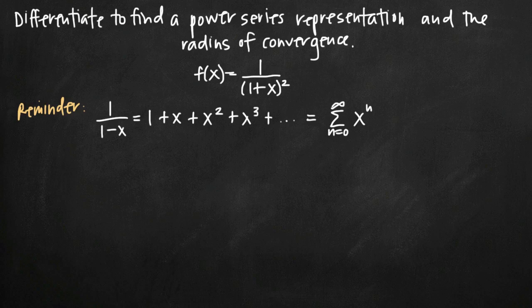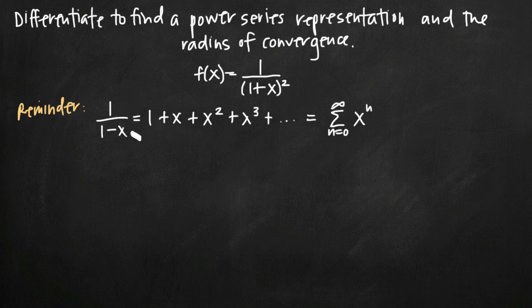There are a couple ways to go about this, but one of the most common ways is to find a similar power series that's already well defined. We have, for example, the sum from n equals 0 to infinity of x to the n power, whose terms are 1 plus x plus x squared plus x cubed, and so on. We know its sum is 1 divided by 1 minus x — this is a well-known power series.